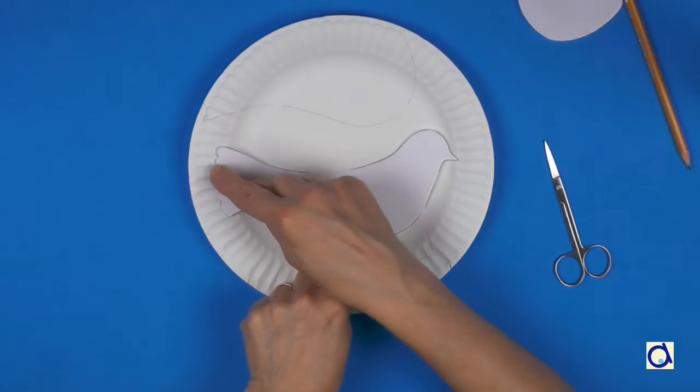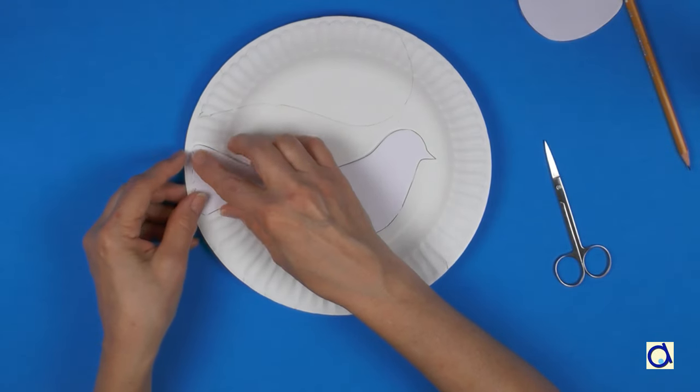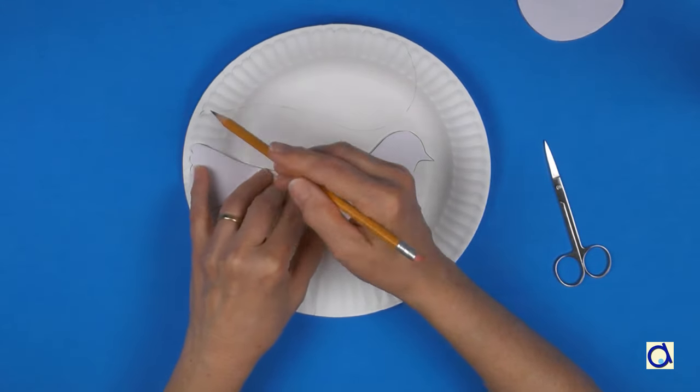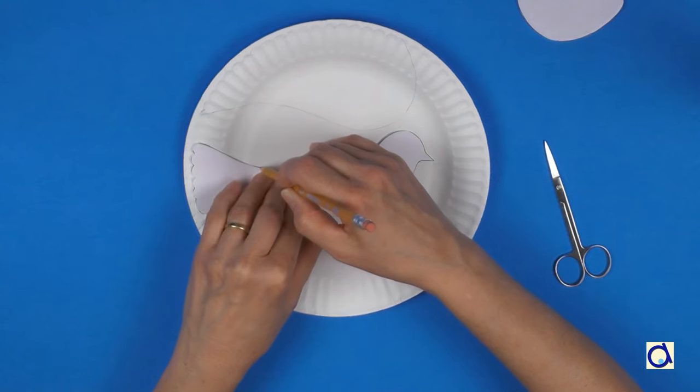Then place the pattern of the body of the dove with the end of the tail aligned with the edge of the plate. Trace around the pattern of the body on the paper plate with a pencil.